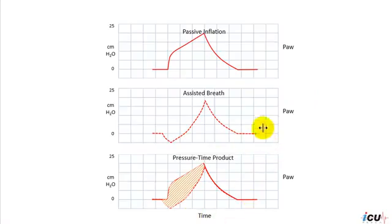The adequacy of flow during volume control ventilation can be evaluated with the pressure-time waveform. Since the total work performed during the breath is the sum of the patient's work and the ventilator's work, we can evaluate the relative contributions of both by comparing the shapes of the pressure-time waveform in passive inflation breath and assisted breath.